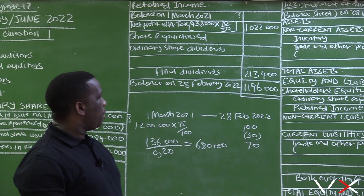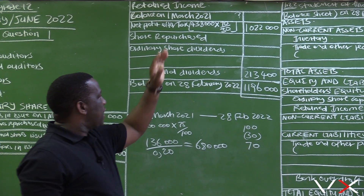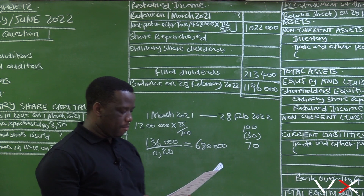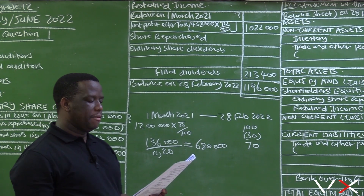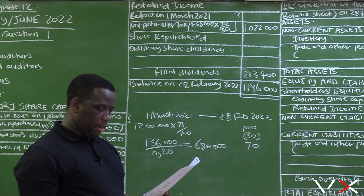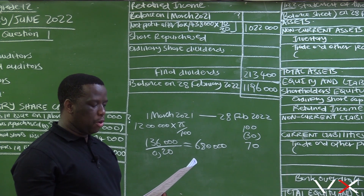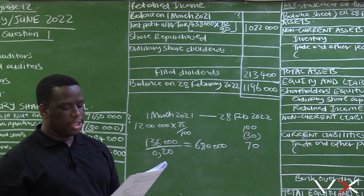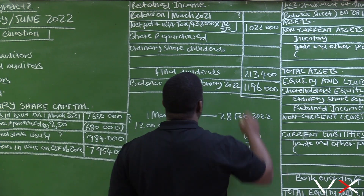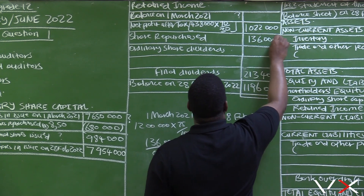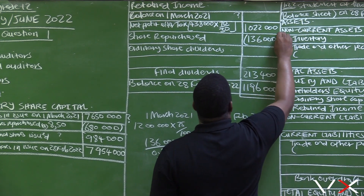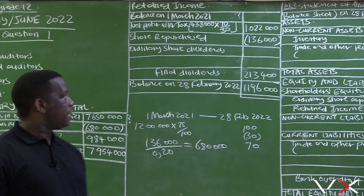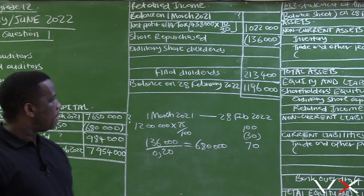Shares repurchased — this is retained income, and what is recorded here is the above average. In information B, under share capital and dividends on page 5, we were told that 8,000 shares were repurchased from a retired shareholder. He was paid 20%, which is 136,000 above the average share price. Because we are buying back shares, this reduces our retained income, so this amount must be in brackets.